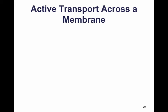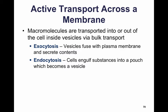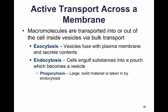We talked about moving ions and small molecules. Now let's talk about macromolecules. Macromolecules are transported in or out of the cell inside vesicles — this is called bulk transport. We talked about vesicles pinching off from the Golgi apparatus to secrete things, which is exocytosis. We also have endocytosis, where cells engulf substances into a pouch which becomes a vesicle.